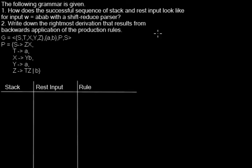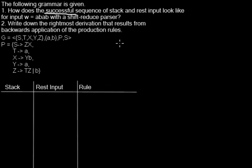In this video I show you how shift-reduce parsing works. It might also be called bottom-up parsing. Bottom-up parsing might refer to different kinds of algorithms, but in our context if only bottom-up parsing is mentioned, then shift-reduce parsing is meant. The two tasks here are: first, to give the successful sequence of steps that leads to the goal, and second, to retrieve the rightmost derivation from our trace.